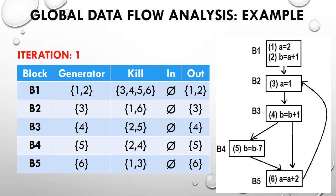The left hand side matrix shows how we find the generator, kill, in, and out values. In the b1 block, variables a and b have been created, so b1 is generating variables a and b. Hence the generator set for b1 is {1, 2}. The b2 block creates variable a, so statement 3 is the generator of b2. Similarly, statement 4 is the generator of b3, statement 5 is the generator of b4, and statement 6 is the generator of b5.